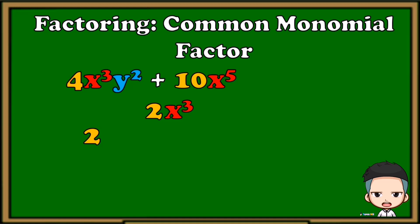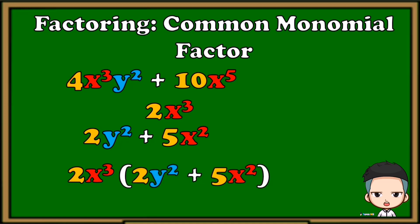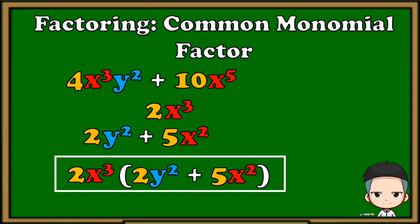Next, just copy the y squared. Copy the operation and divide the second term: 10 divided by 2 is 5, and x raised to 5 divided by x cubed is x squared. Now arrange the answers: copy the common monomial factor and multiply it to the quantity of 2y squared plus 5x squared. The factored form of 4x cubed y squared plus 10x raised to 5 is 2x cubed times the quantity of 2y squared plus 5x squared.